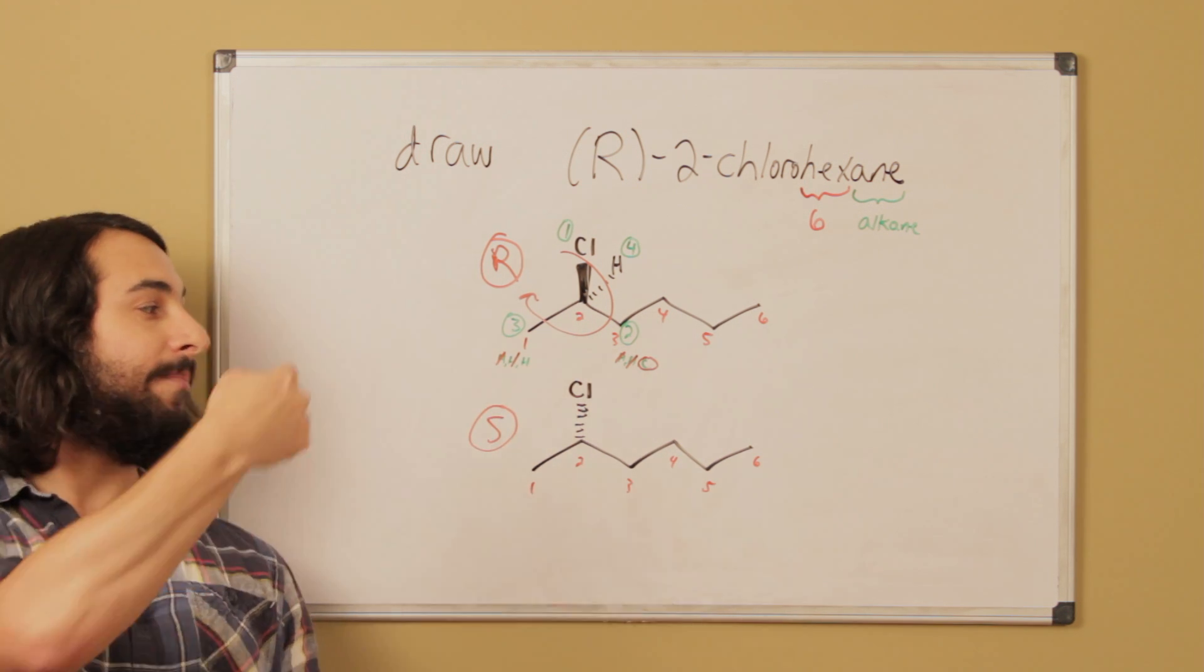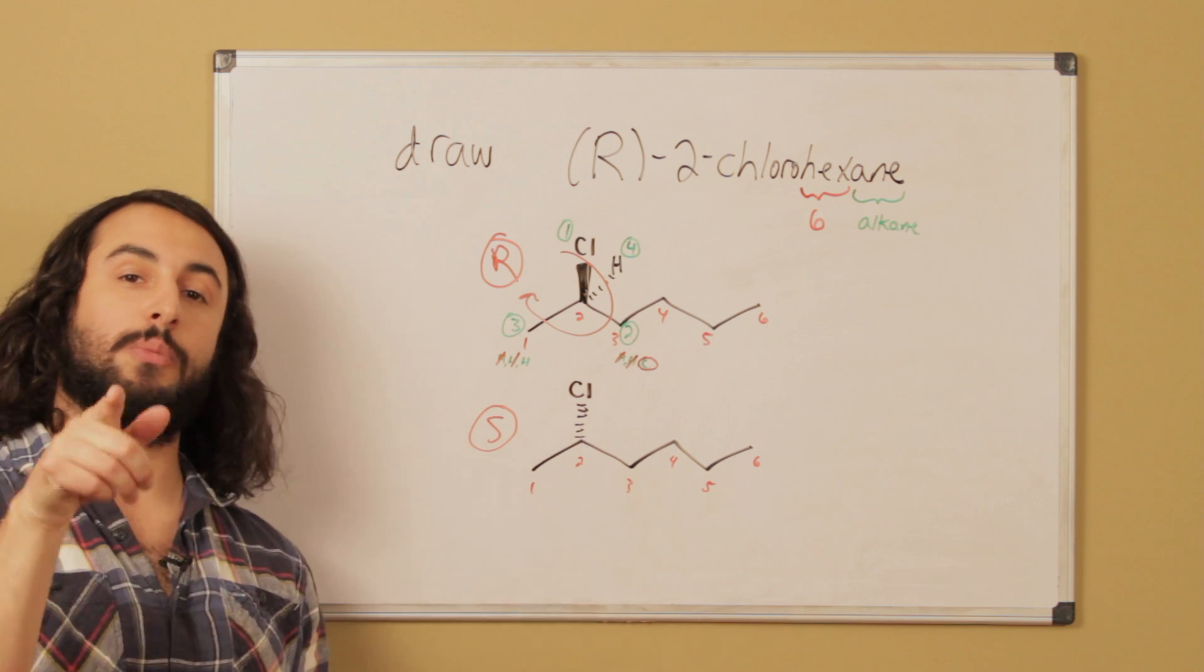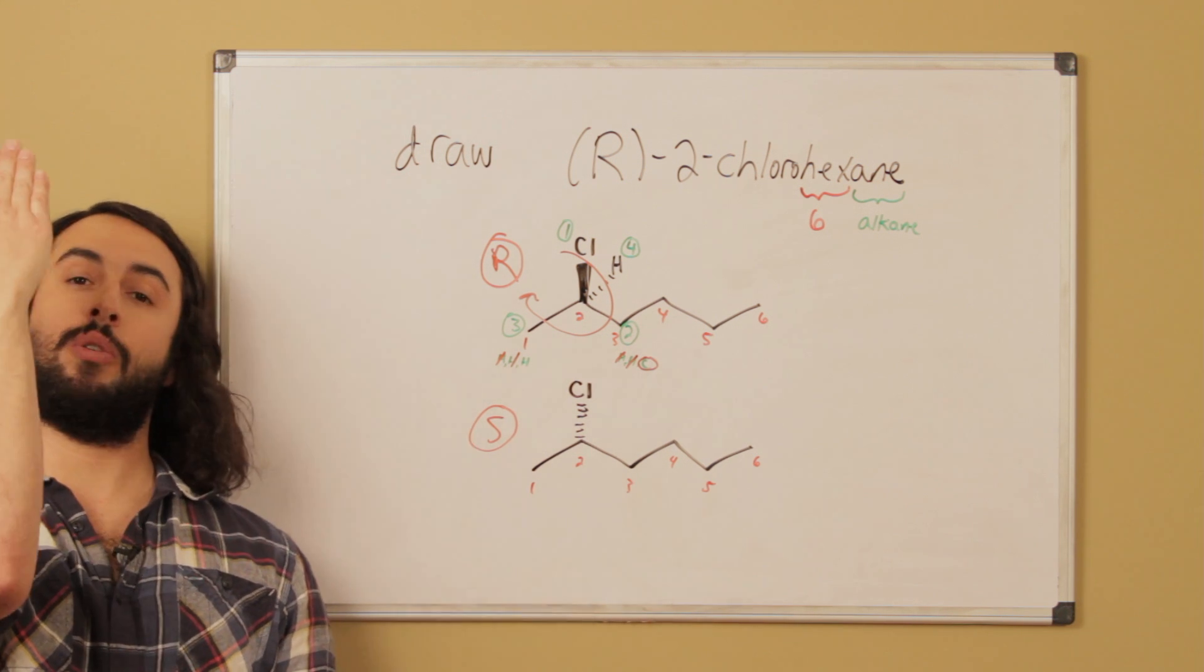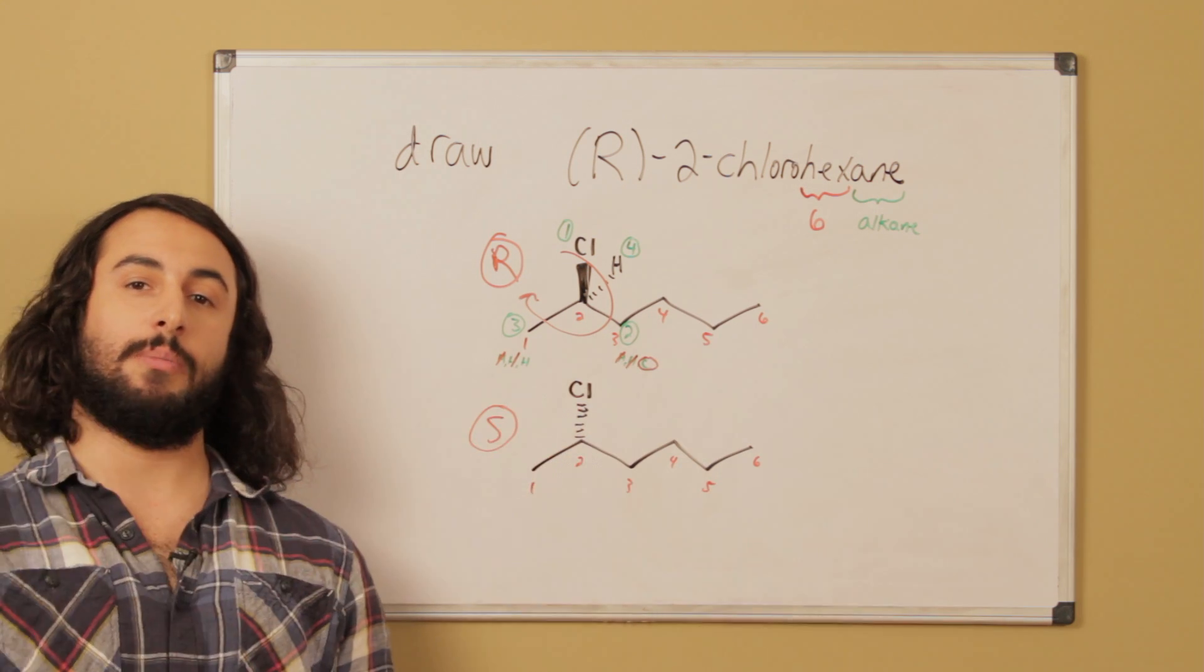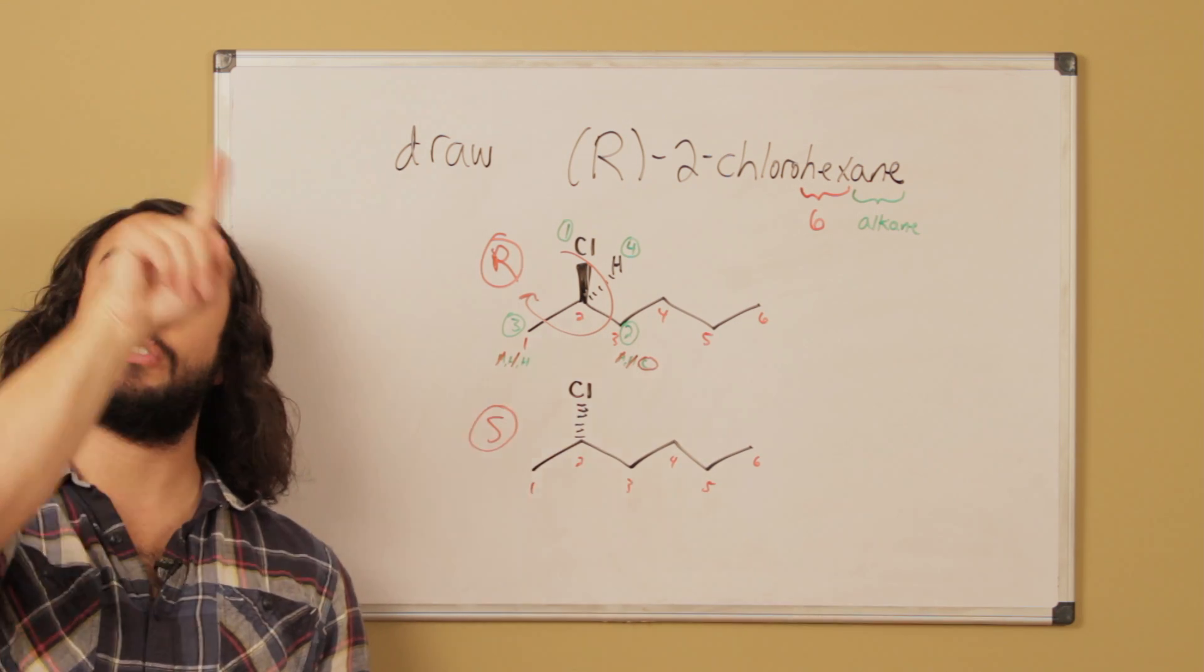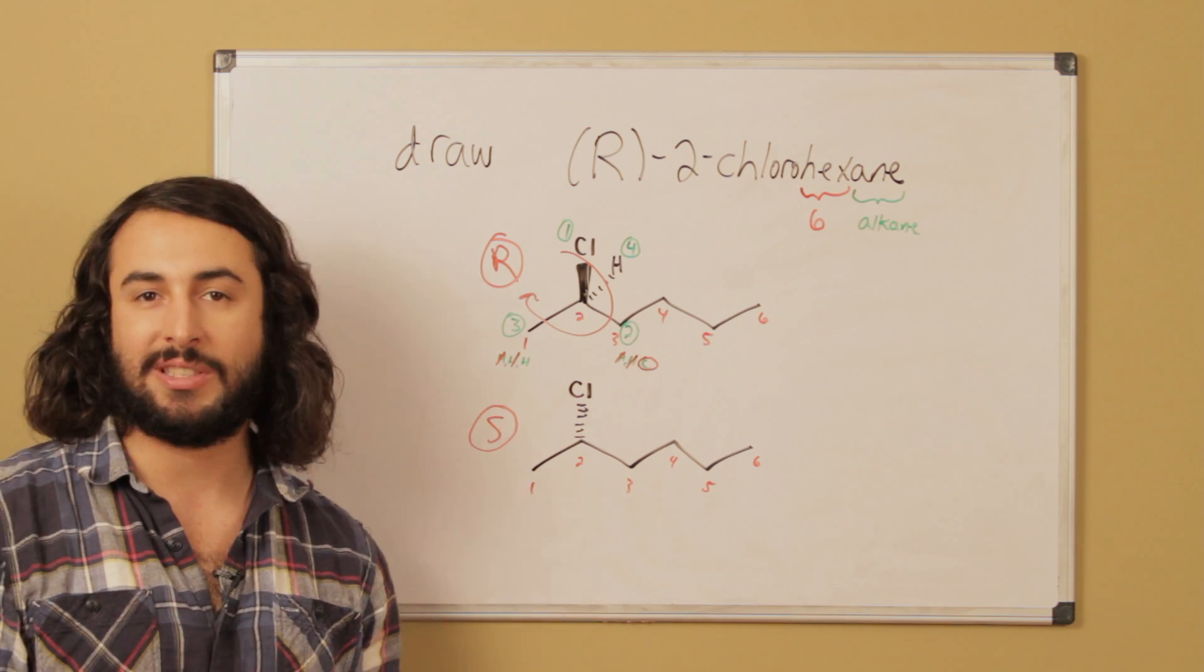We can either imagine ourselves behind the board. Right now if I'm on the other side of the molecule from where you're standing, I can look at the chlorine that's coming towards me, the rest of the molecule going that way, and then the methyl here. I see that as counterclockwise, which is S. But if you have a hard time with spatial reasoning...